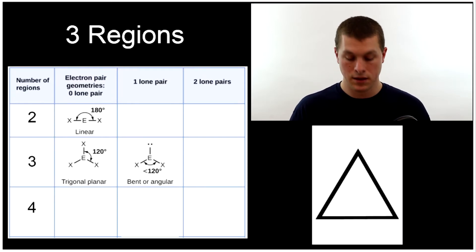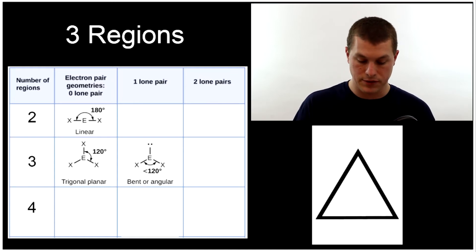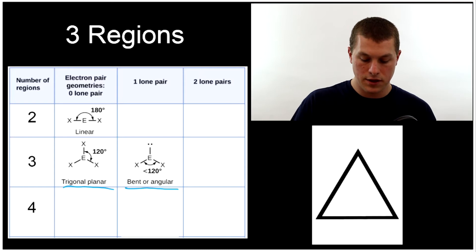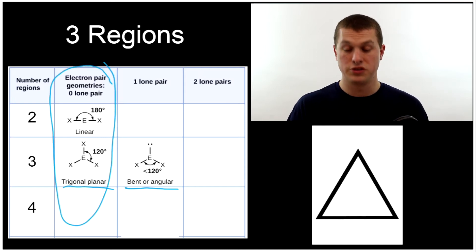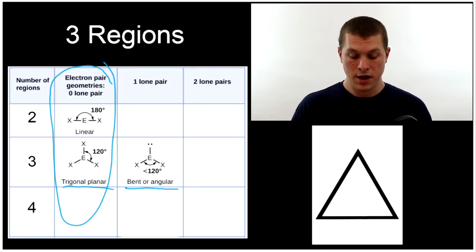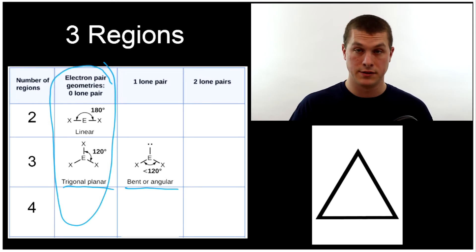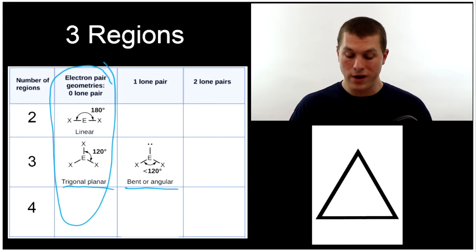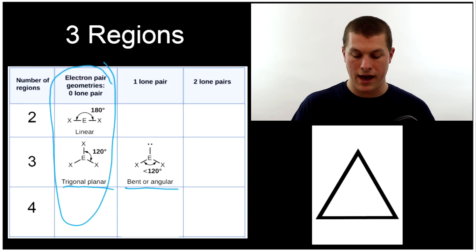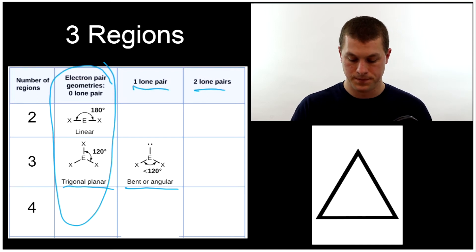If I have three regions of electron density, I can replace one of those atoms with a lone pair and still have a central atom, and that gives me two different shapes. One is trigonal planar and one is bent or angular. You'll notice that when there are zero lone pairs, the electron geometry and molecular geometry have the same name — linear and trigonal planar. The names become different once we start adding lone pairs.